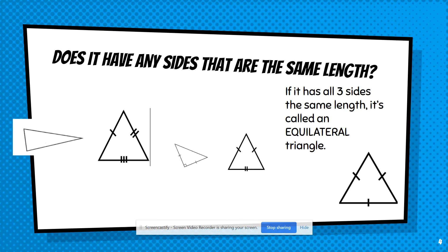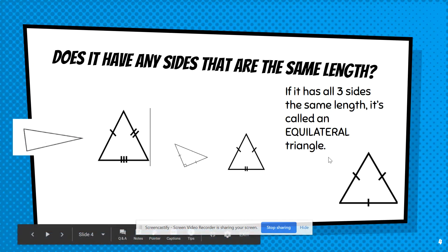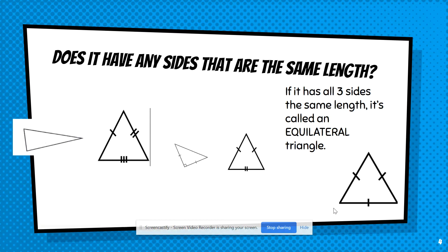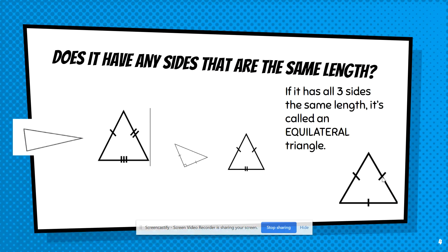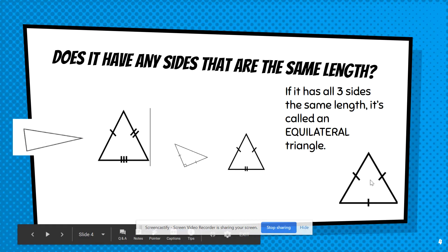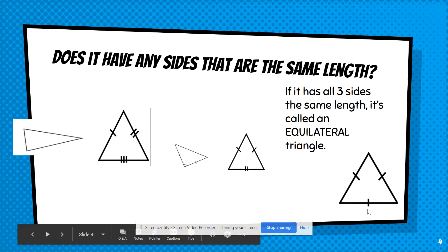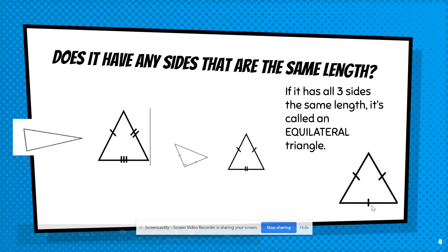If you have all three sides that are the same length, it is called an equilateral. Equilateral means equal sides. The triangle has equal sides, and they're going to mark those sides with these congruent markings — these little lines right here. Since this side is marked, this is marked, and this is marked, it's telling you that all three of these have the exact same length. So they're all three equal — that's an equilateral triangle.